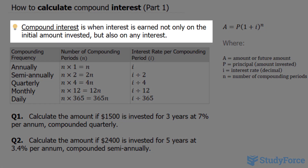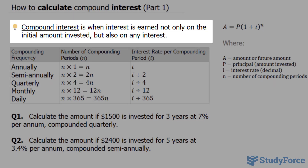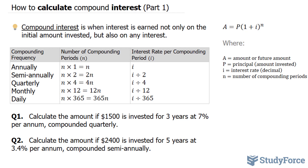Compound interest is when interest is earned not only on the initial amount invested, as in simple interest, but also on any interest as well. So pretend you made some interest money after the first payment period — you would add that money to the amount that you initially invested, and then you would end up with interest on top of that for the next payment period.